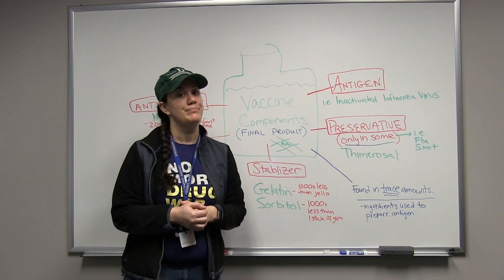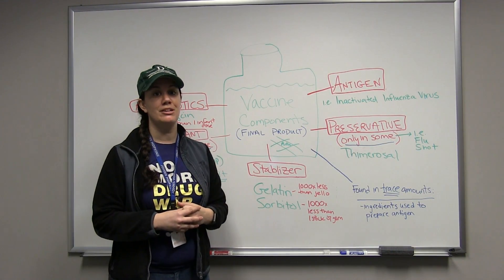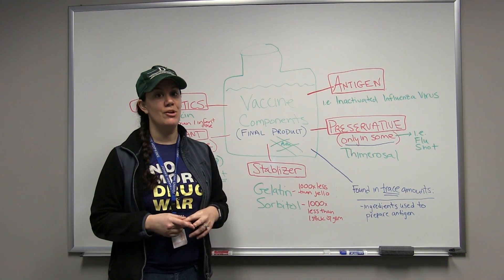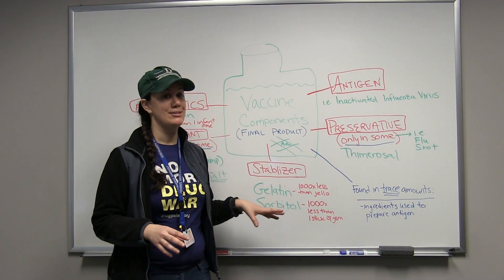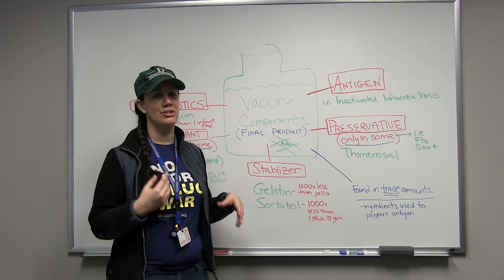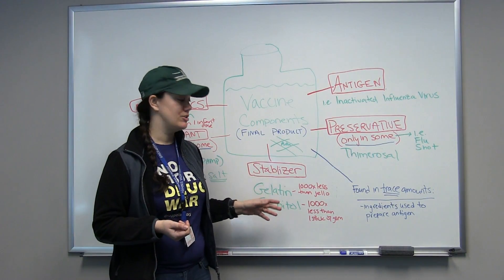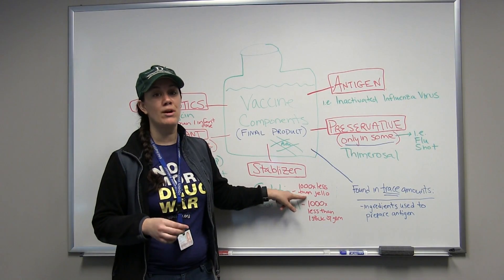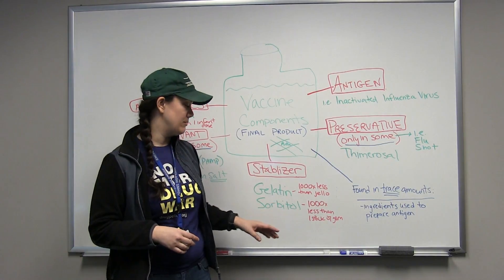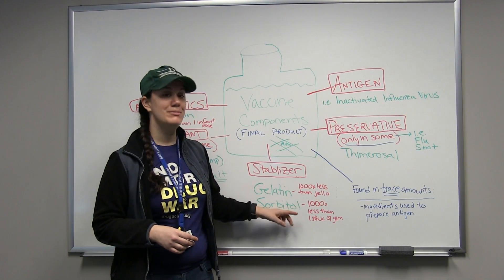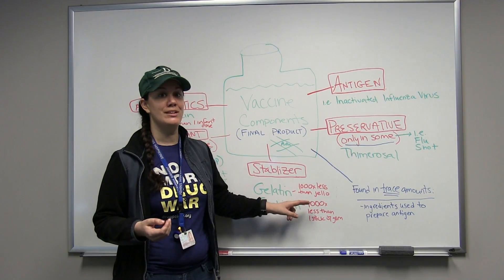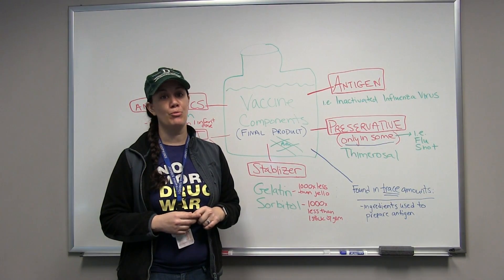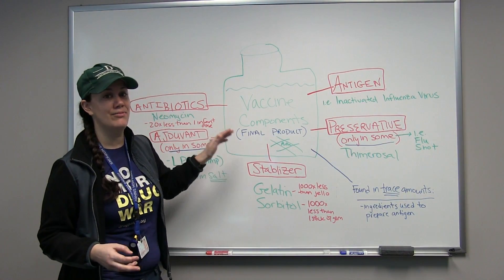Let's go on to stabilizers. Two examples of commonly used stabilizers are gelatin and sorbitol. Really important to notice about the dosages — which again you can't easily find on the package insert, you have to do some sleuthing. Gelatin in a vaccine is actually a thousand times less than in one serving of Jell-O. Sorbitol is a kind of sugar, and it's found in vaccines a thousand times less than in one single stick of chewing gum. So really small amounts in the final vaccine product.